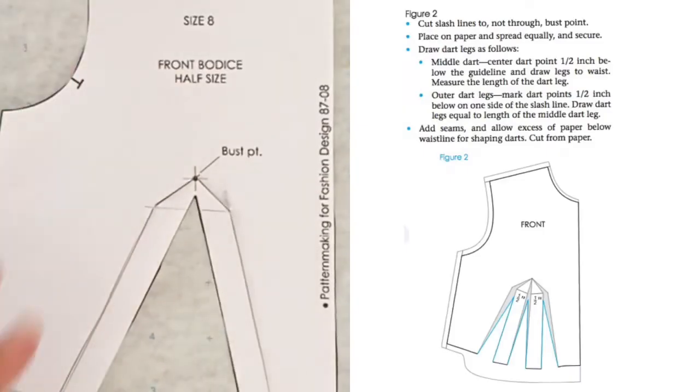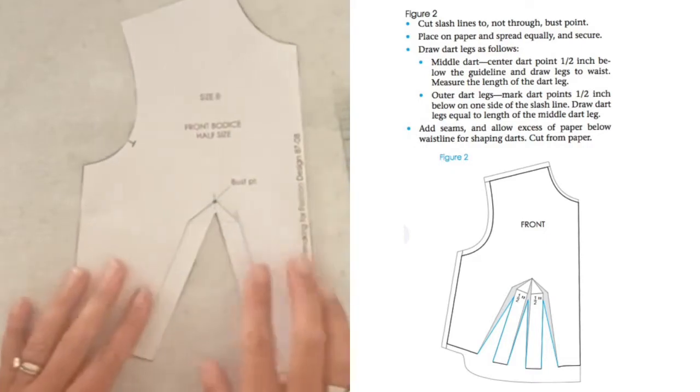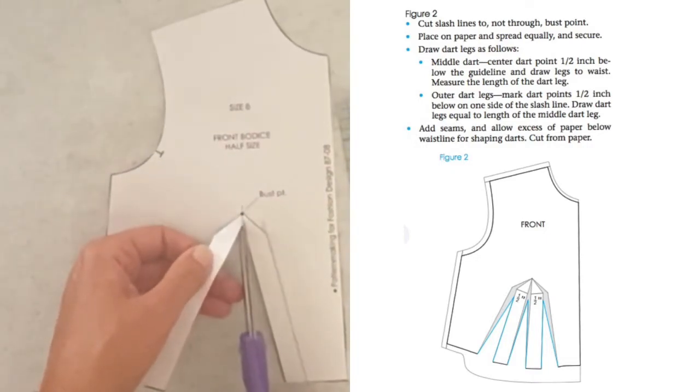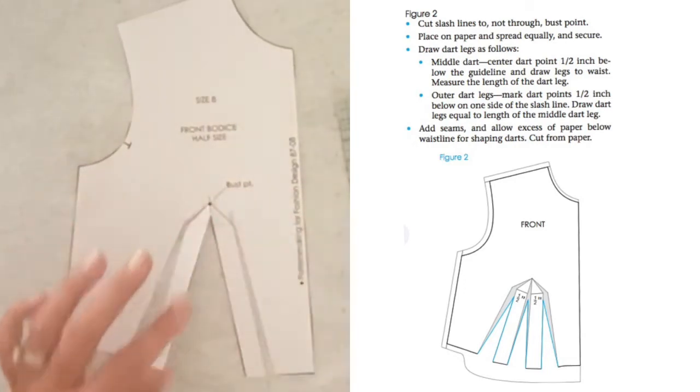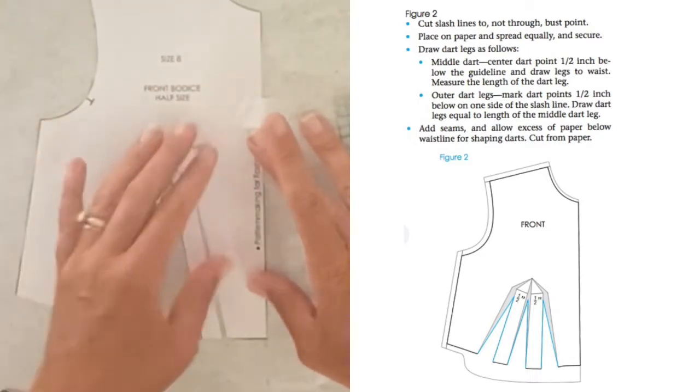Okay, there's one. Great, there's the other. Now, place on paper and spread equally and secure. You know what, I think they didn't tell us to do this, but I think we're also going to have to slash right here with our scissors. It allows the dart to move a little bit better. Go ahead and secure this guy.